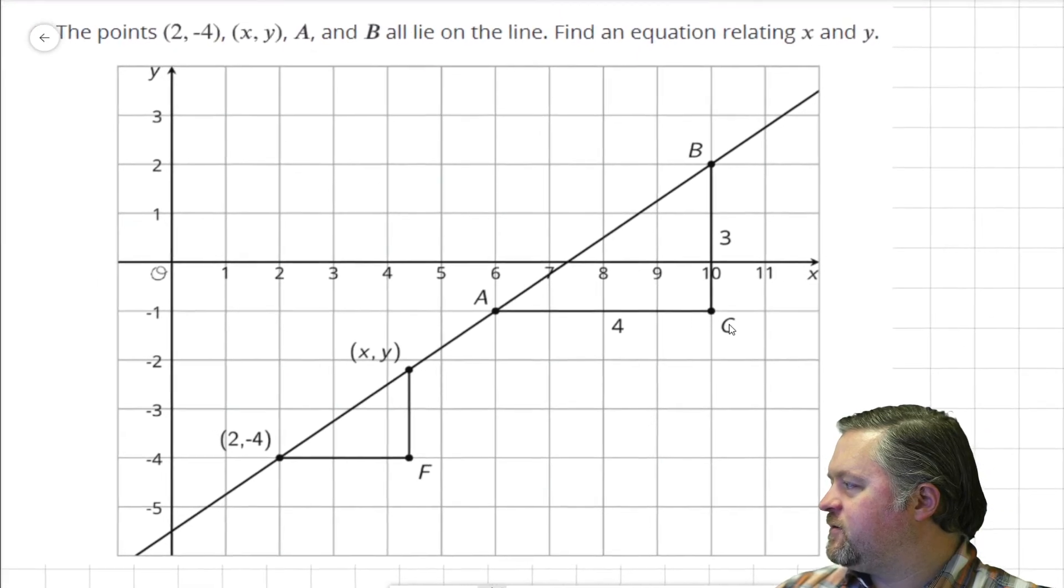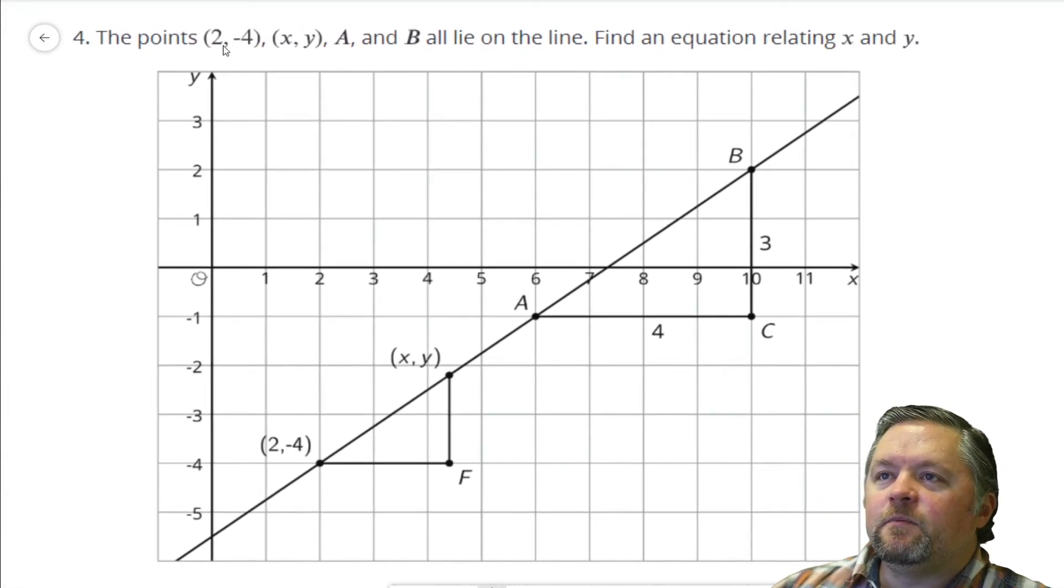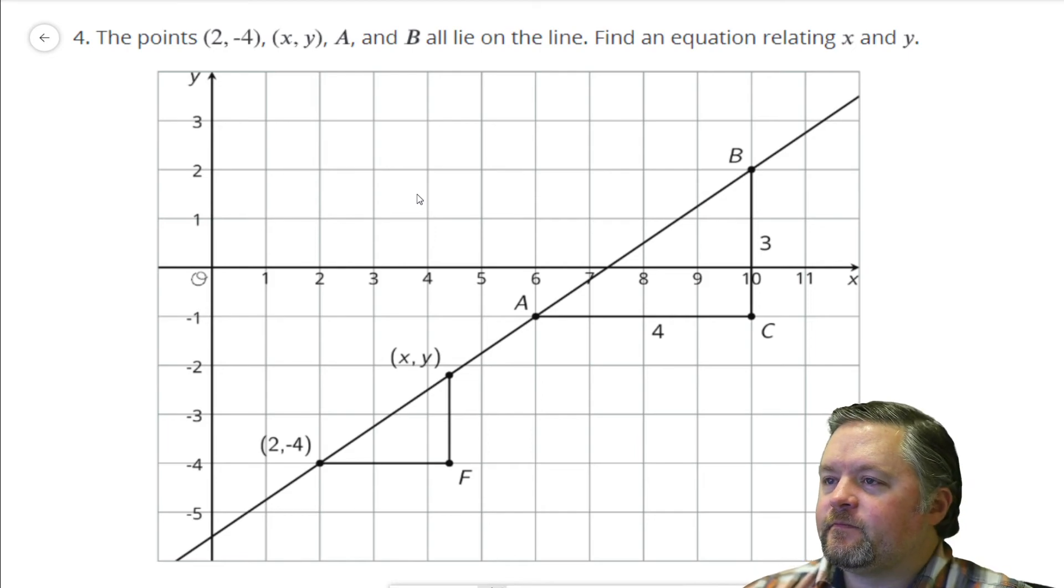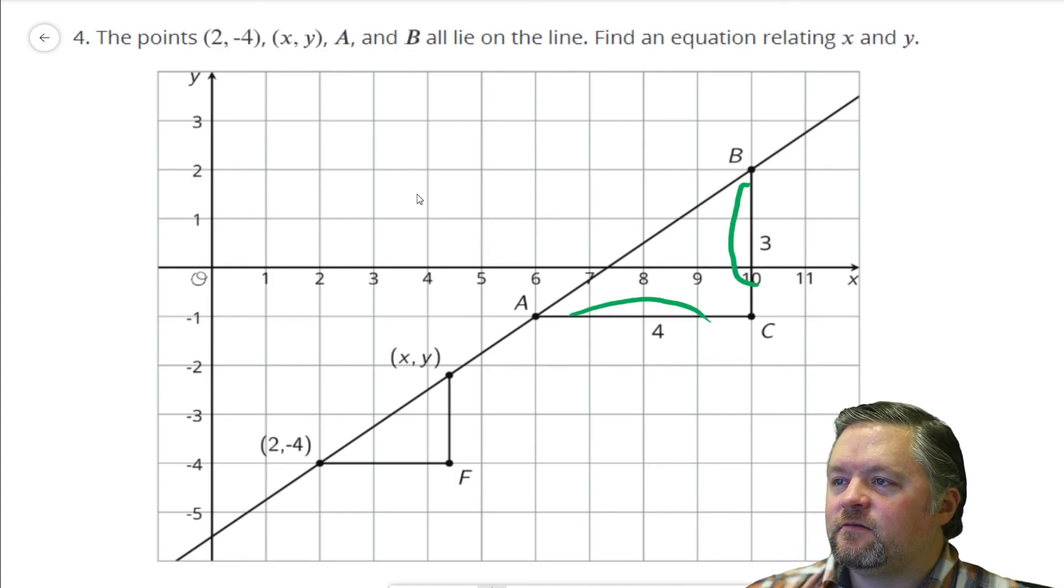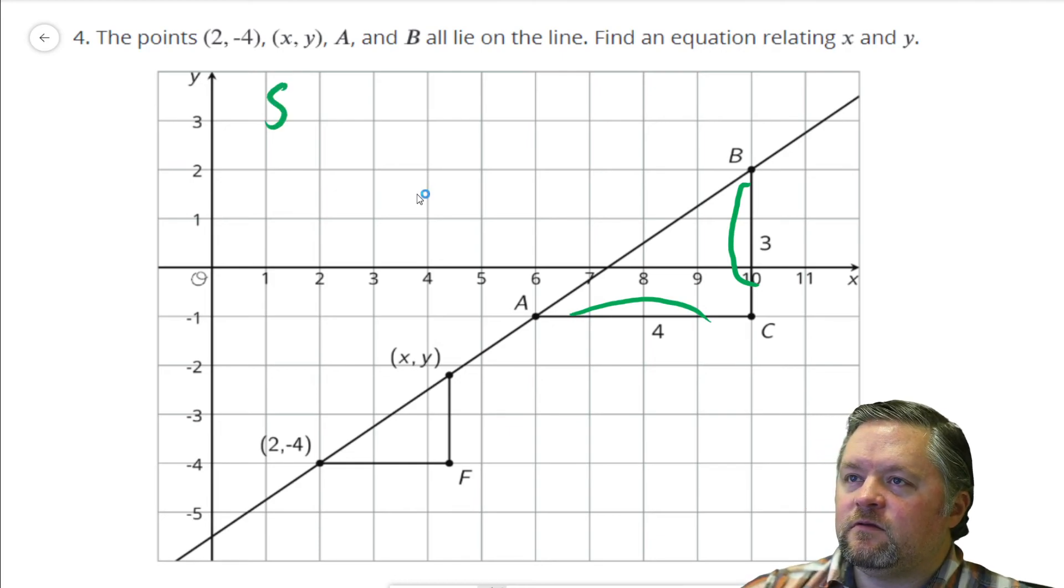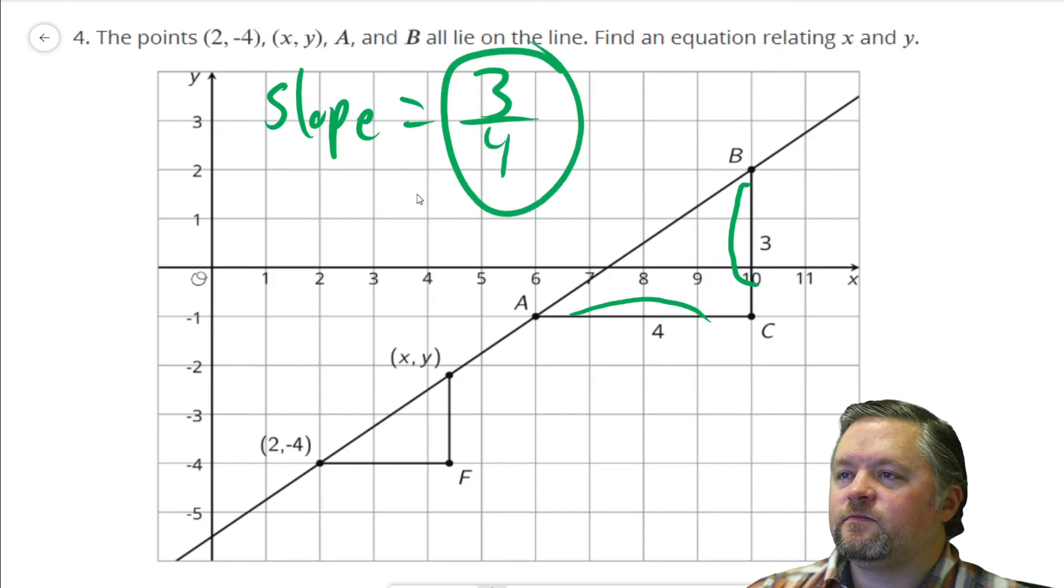How big can I make this so we can see it nicely? Okay. The points (2, -4), (x, y), A, and B all lie on a line. Find an equation relating x and y. This is kind of like what we were just doing. Equation of this line. So first we have to find the slope. What's the slope of this line? I see the rise there and the run there. Our slope is 3 over 4.